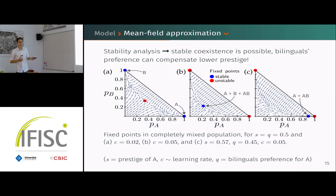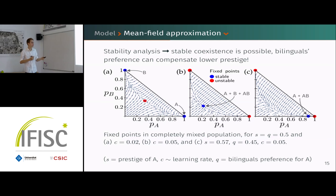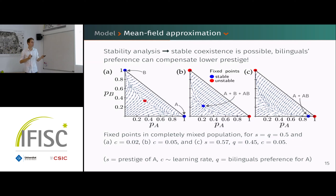For neutral prestige, bilingual preference, and a rather low learning rate c, the only stable states are those where one of the two languages disappears and there are only monolinguals in one language. When you increase the learning rate a bit, a middle point emerges as stable, meaning all three populations survive. More interestingly, there is a third state where language A is favored globally but bilinguals prefer B — in that case, language B actually survives only through the bilinguals.